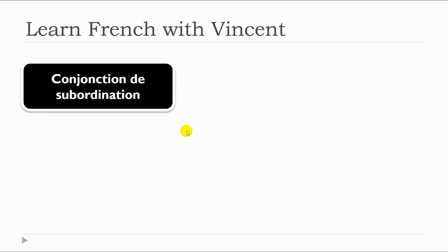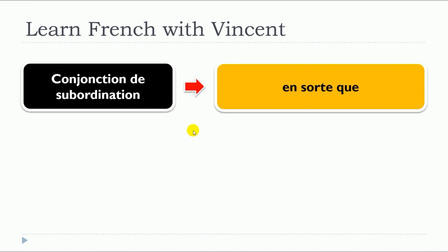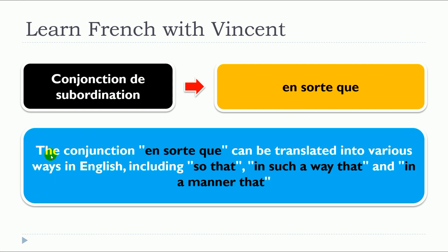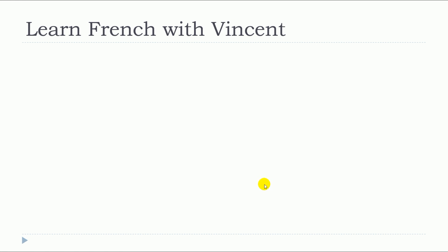This lesson is about en sorte que. The conjunction en sorte que can be translated in various ways in English, including 'so that,' 'in such a way that,' and 'in a manner that.'